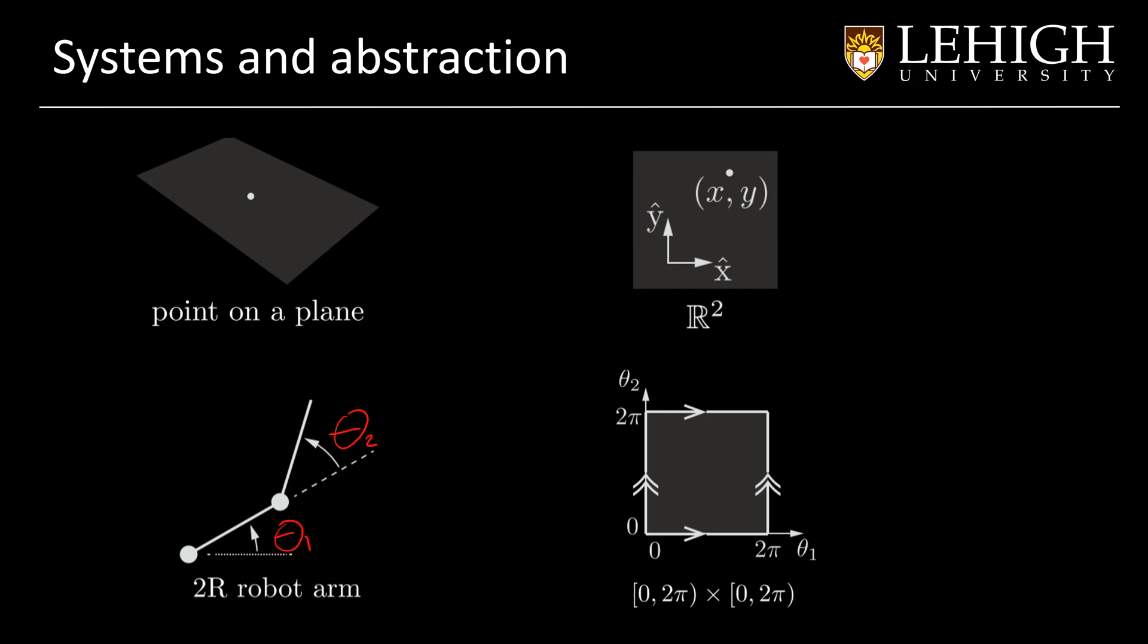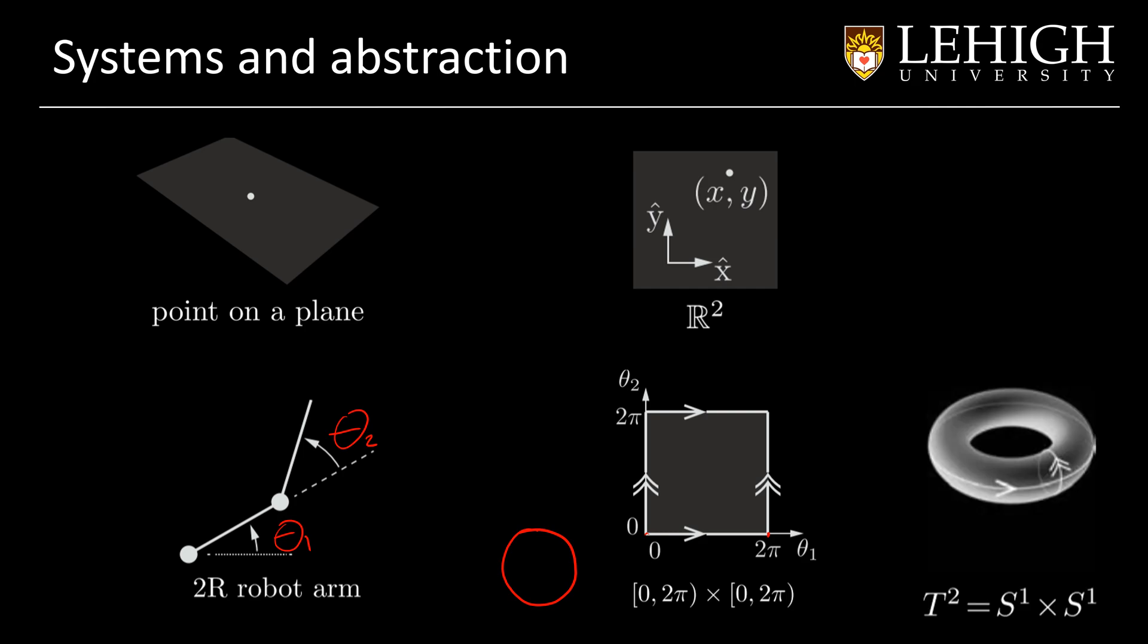However, this system is very particular because 2 pi is equal to 0. In the previous case, we mentioned that theta 1 was represented by a circle. And now, when we have two variables of this type, what we will have is something called a torus, that is basically the combination of two circles. We have one circle that will be the representation of theta 1, and the other circle will represent theta 2. So every configuration from this robot arm will be represented as a point on the surface of this torus.